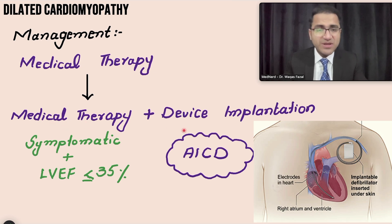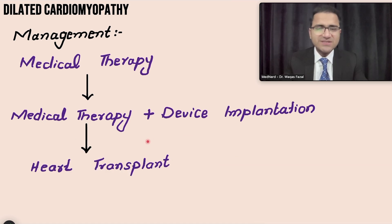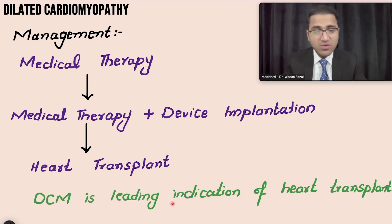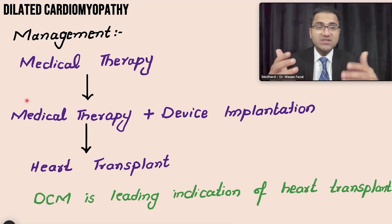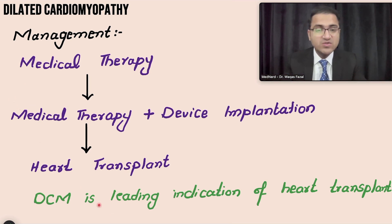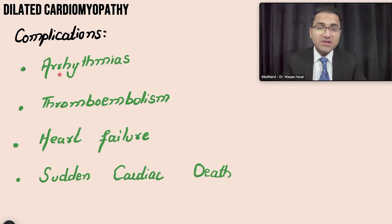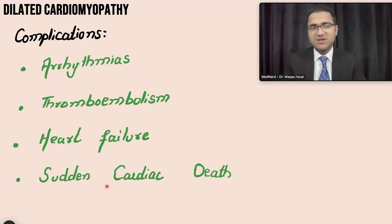If the patient is on medical therapy with device implantation but still has severe overt heart failure with arrhythmias, these dilated cardiomyopathy patients are the best candidates for heart transplant — dilated cardiomyopathy is the leading indication for heart transplant. Complications of dilated cardiomyopathy include arrhythmias, thromboembolism, heart failure, and sudden cardiac death due to arrhythmias.